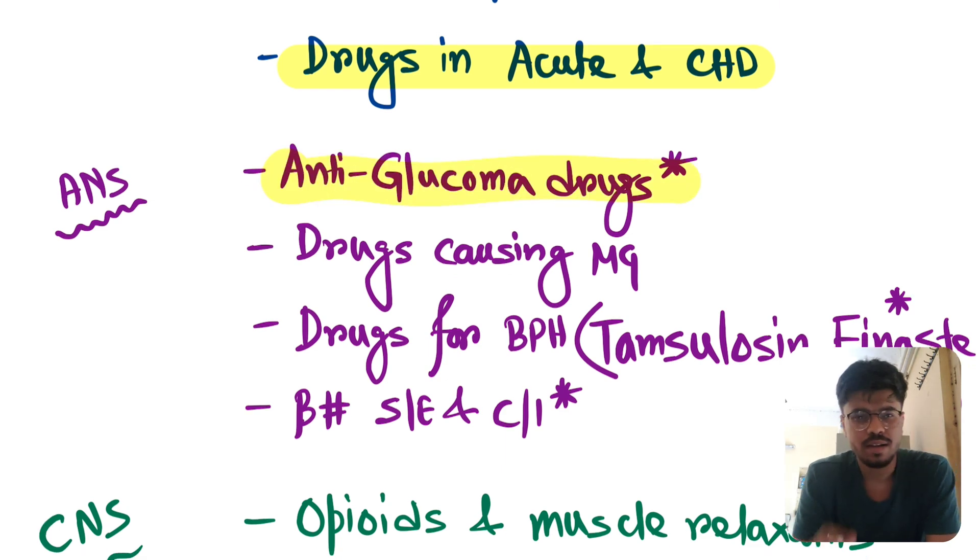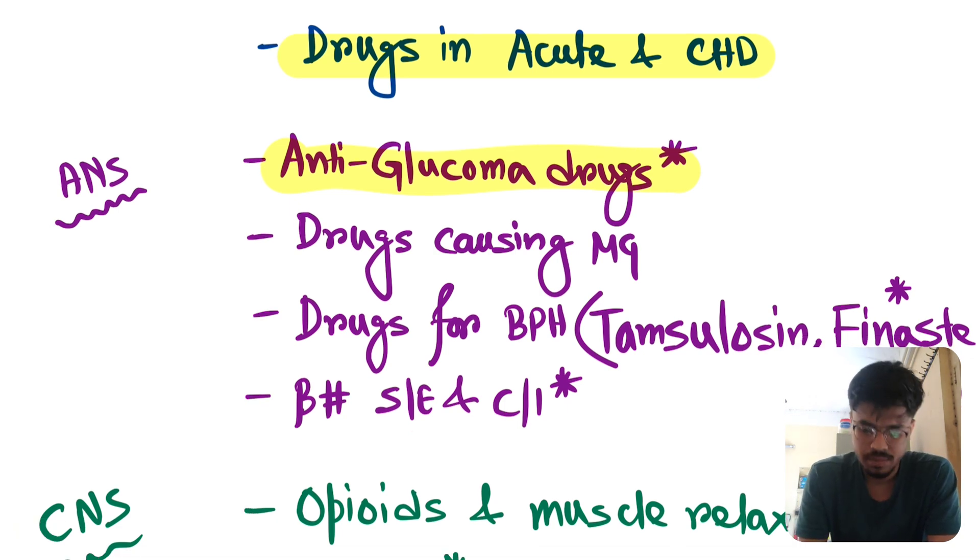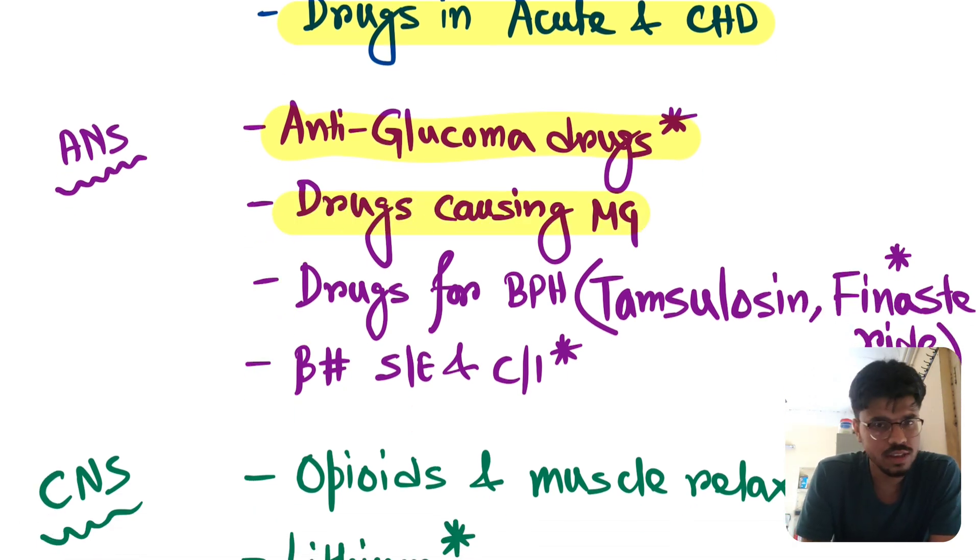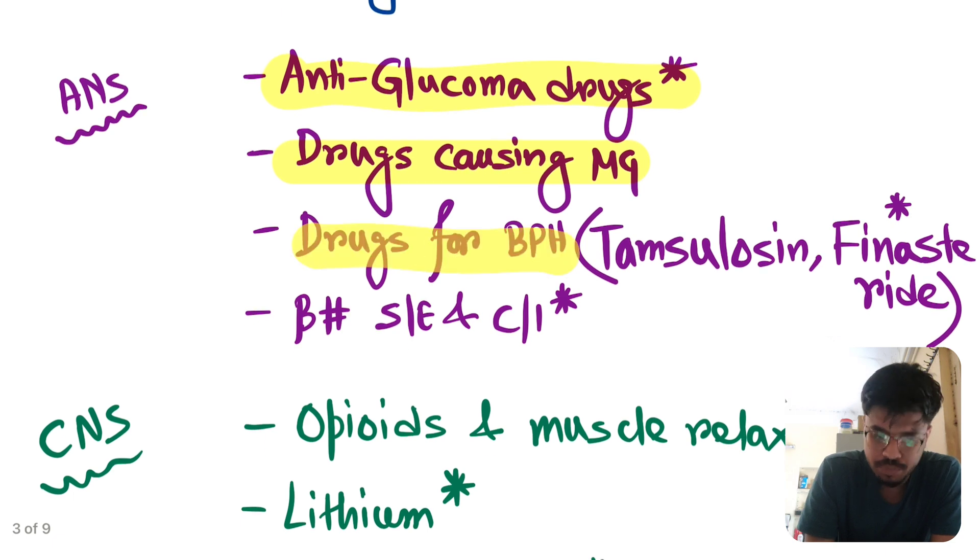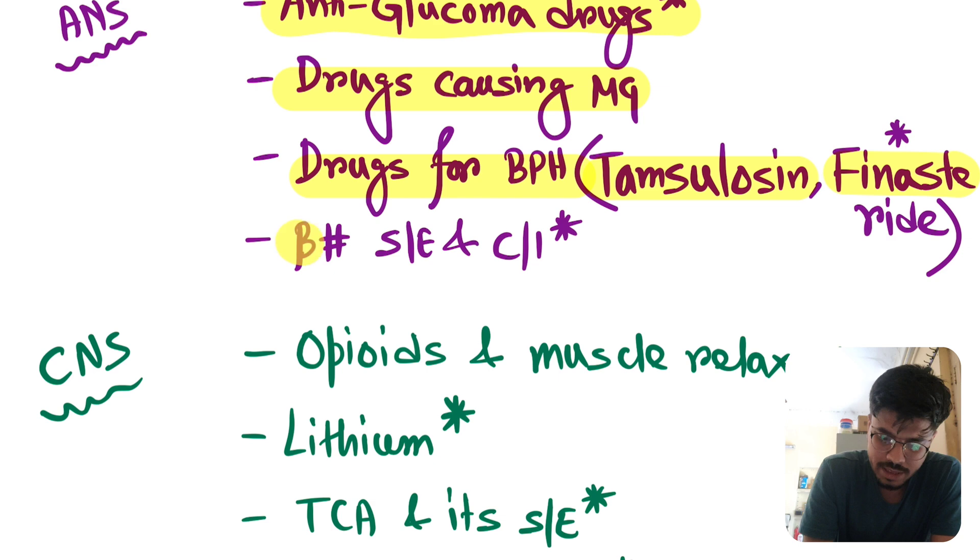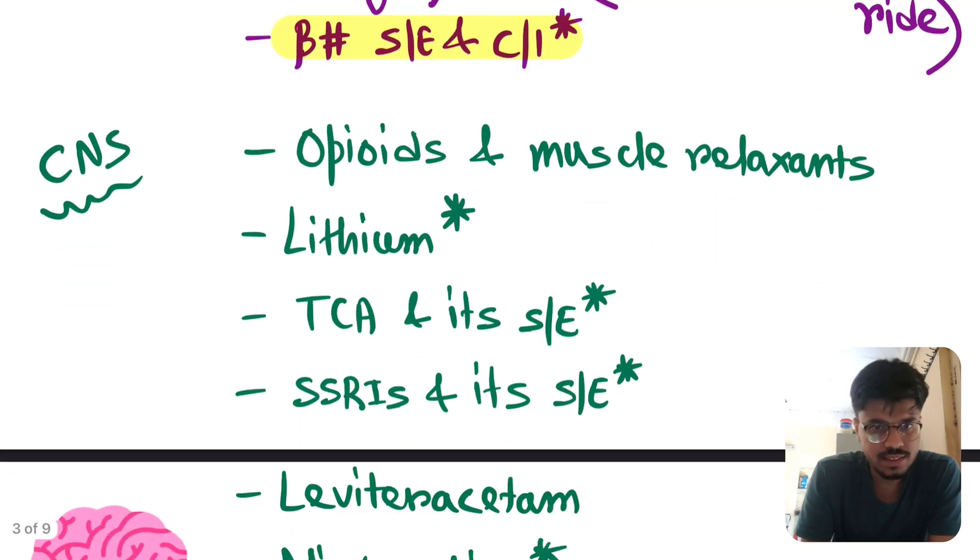Now in ANS, anti-glaucoma drug. Very very very very important. In every year, there is minimum one question from anti-glaucoma drug. Timolol, brimonidine, latanoprost, all are important. At least mechanism of action and all the side effects. You have to read this. Drugs causing myasthenia gravis. Drugs for BPH. This is again a very important topic. Specially tamsulosin and finasteride. Previously asked topic and repeatedly asked topic. Beta blocker side effects and contraindications.